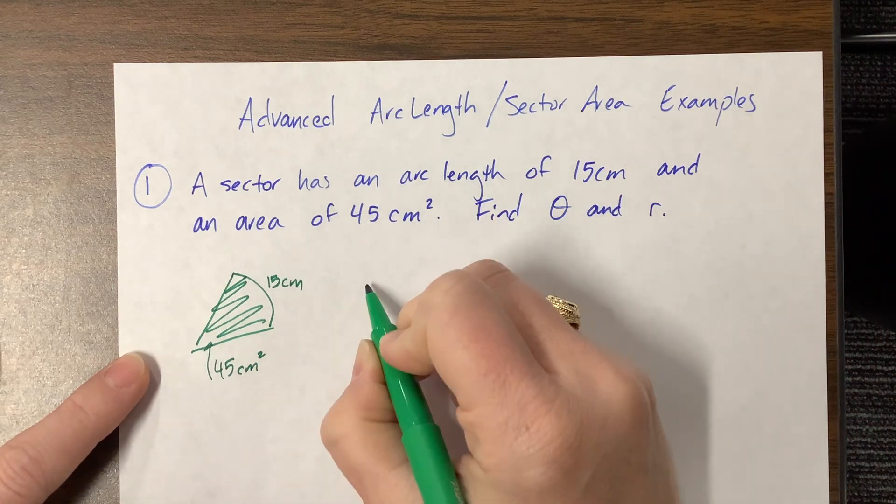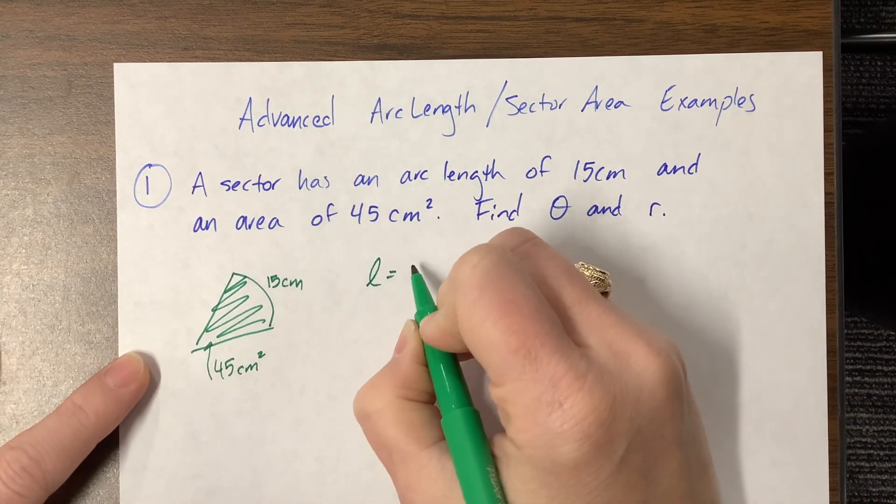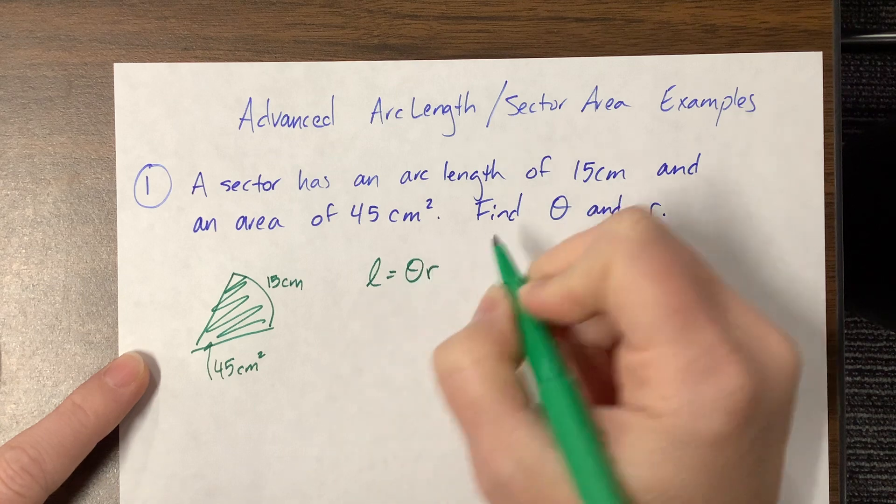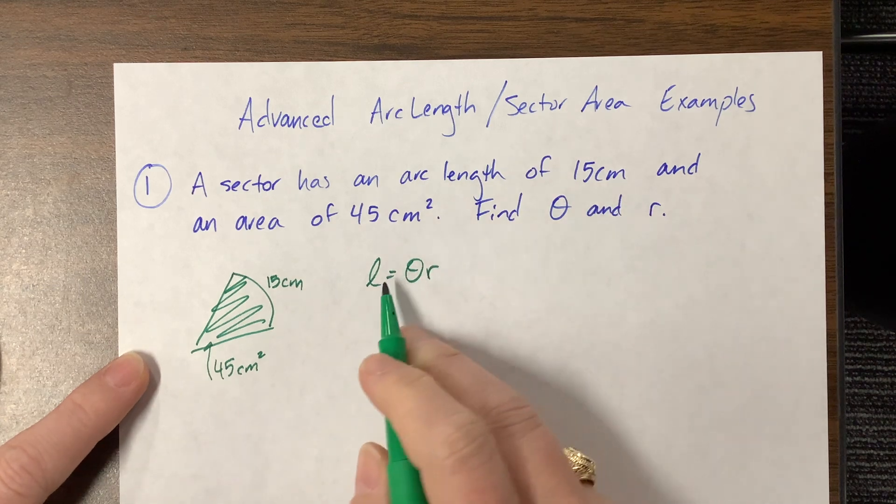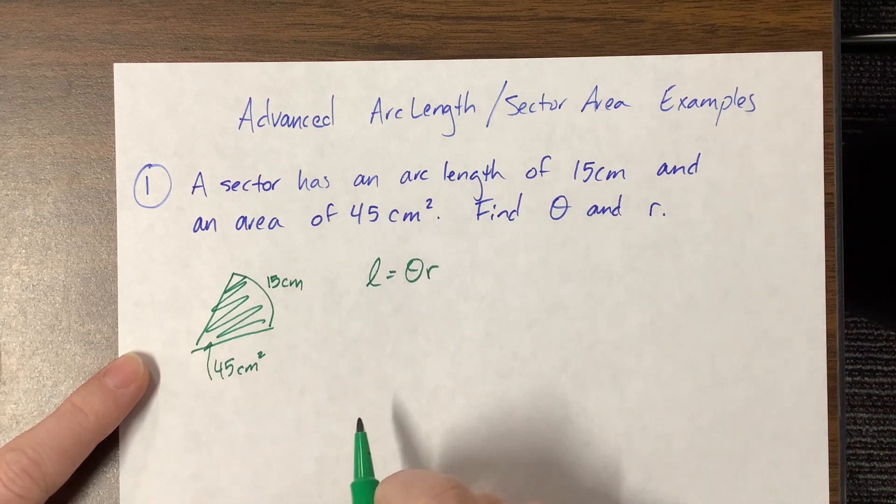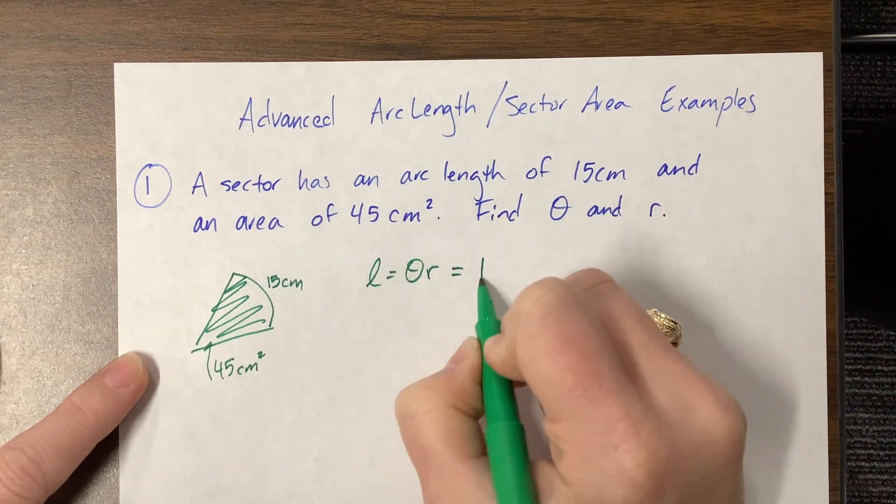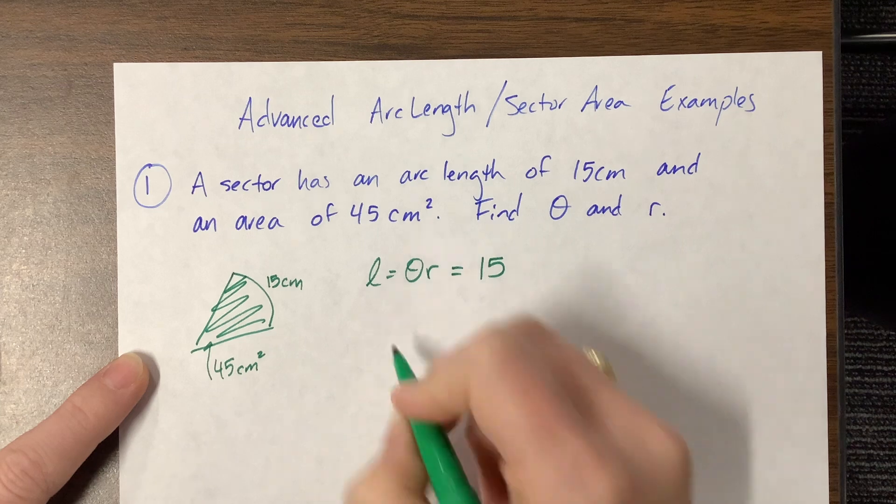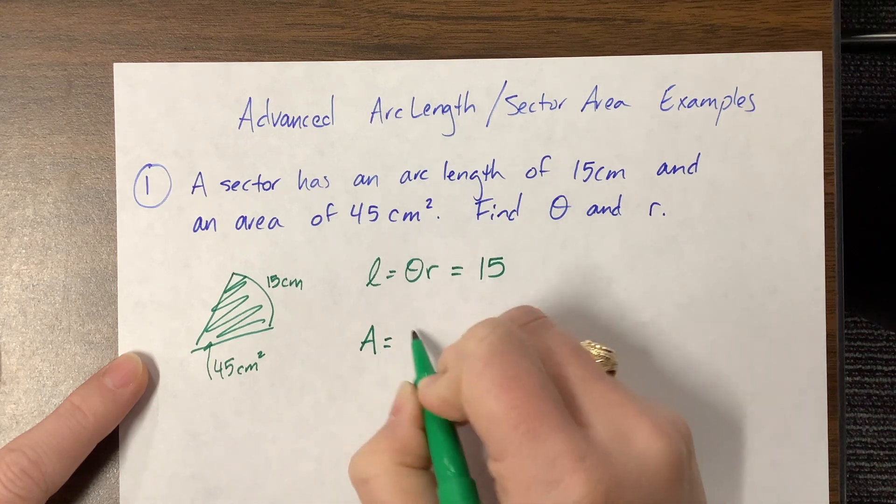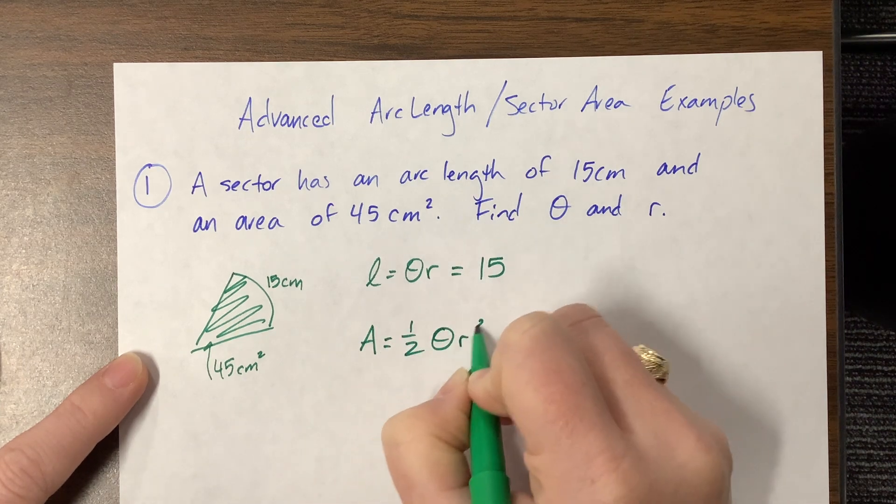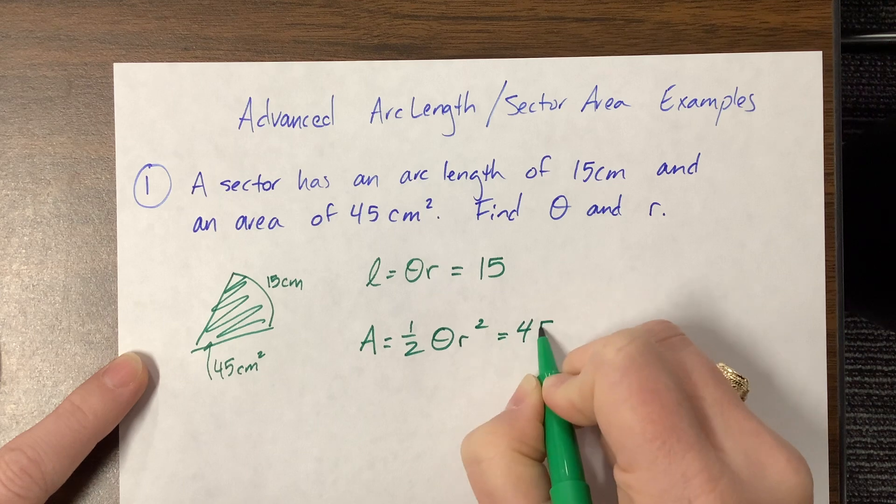We do know our formulas when theta is in terms of radians and those formulas are significantly easier to work with and the arc length formula is theta r. So they tell us the arc length is 15 so we know that theta r is equal to 15. We also know that the area formula is 1 half theta r squared and then we know that that is equal to 45.